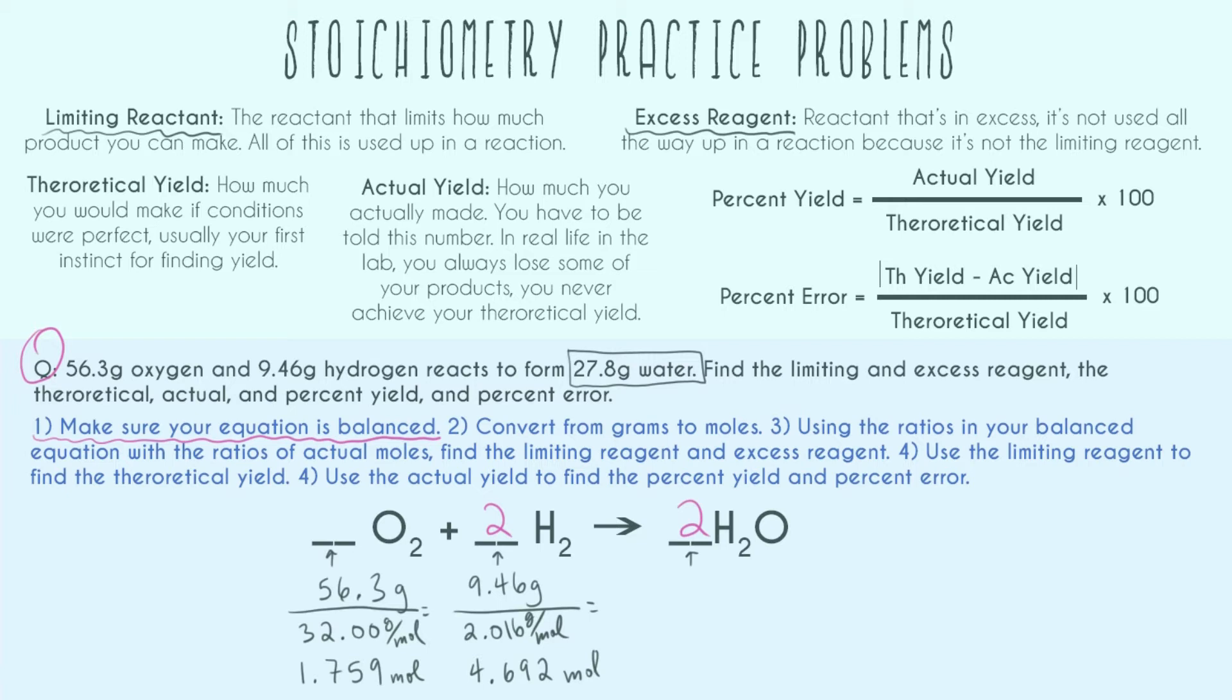With doing limiting and excess reagent, we don't need to actually know how much we made because it's all about how much could we theoretically make. Now it's time to figure out who's limiting and who's excess. And there's a couple of different ways you can do this.